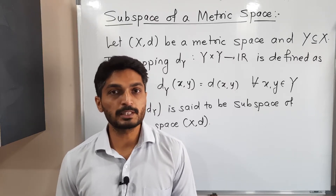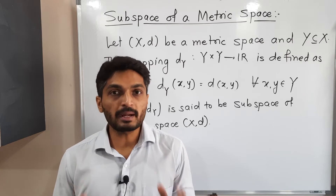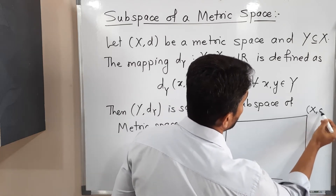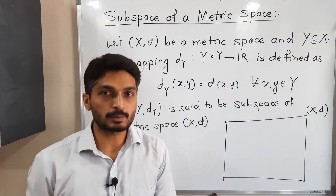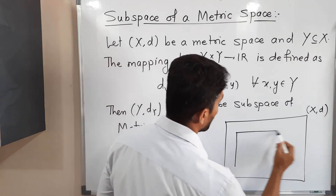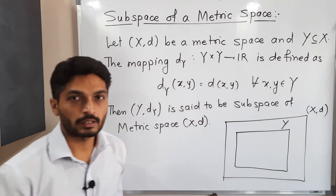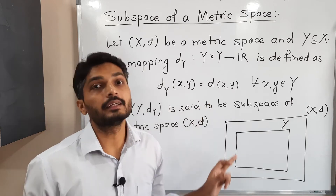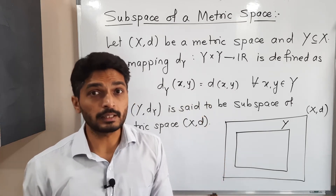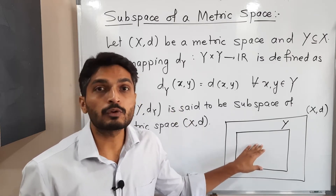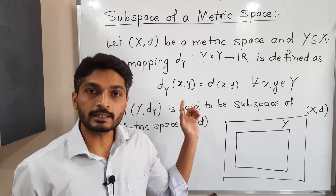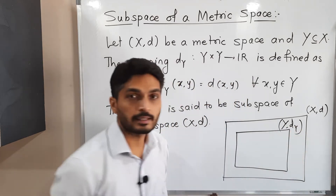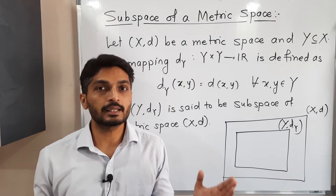Let us discuss the concept of a subspace of a metric space (X,d). Suppose this is our metric space (X,d) and Y is any non-empty subset of X. On Y we define a new metric dY, which is defined using the same metric d - we simply operate d on elements of Y and call it dY. Then Y together with this metric dY is said to be a subspace of the metric space (X,d).